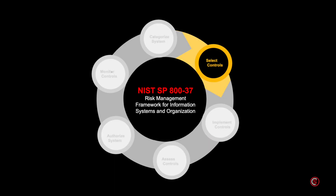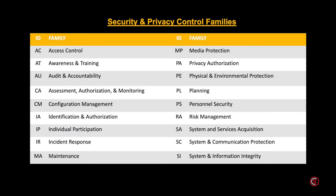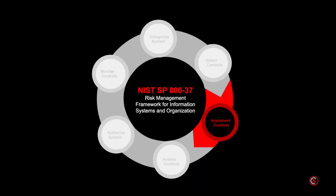Step two is to select security controls. Select an initial set of baseline security controls based on the security categorization, then tailor or supplement the baseline as needed to reduce risk to an acceptable level. You can use FIPS 200 and Special Publication 800-53 to aid with this process. SP 800-53 Revision 5 draft expands to 20 control families and over 900 controls to address privacy, mobile, and cloud security risk.